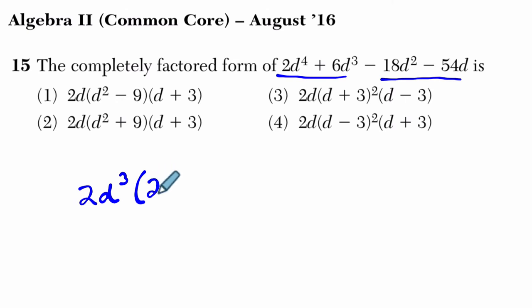And then what's left is, well, what's left would be 2d cubed times d is 2d to the fourth, and then 3 here because 2d cubed times 3 is 6d cubed.